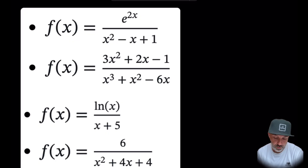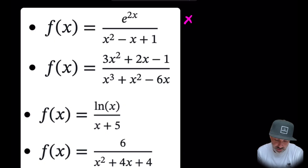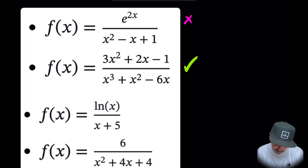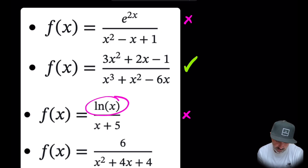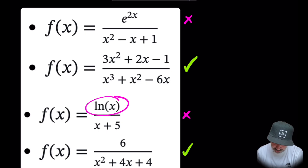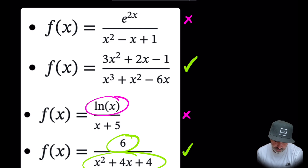Let's try this again with these four questions. Which are rational functions? The first: the numerator is not a polynomial, therefore this is not a rational function. The second: both numerator and denominator are polynomials, so this is rational. The third is not rational because of the natural log. The last one is a rational function because both numerator and denominator are polynomials — the numerator being a very simple 6 times x to the zero.